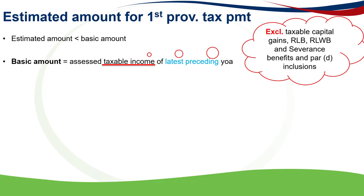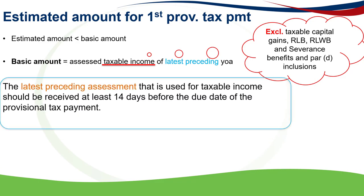The reason for this is because these amounts are not amounts that happen regularly. So to have a fair estimate, if you had any retirement lump sums in the latest preceding year of assessment, you exclude these amounts so that you have a fair estimate of your taxable income. The latest preceding assessment used for taxable income should have been received at least 14 days before the due date of the provisional tax payment.